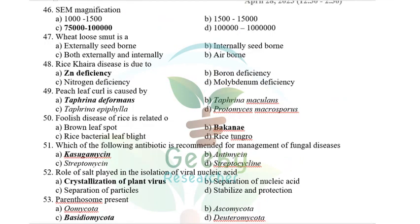SEM (Scanning Electron Microscope) magnification — they gave options like 1000, 1500, 15,000. The maximum magnification of SEM is 75,000 to 1,00,000 (one lakh); with TEM it can go up to 1 crore. Wheat loose smut is an internally seedborne pathogen — this question appears in many competitive exams.